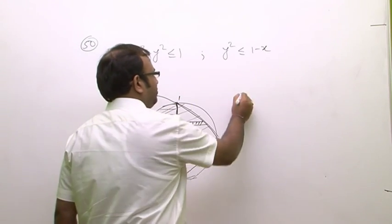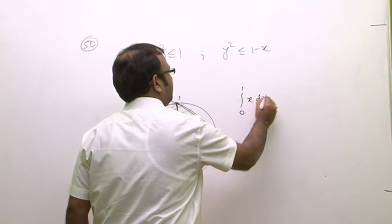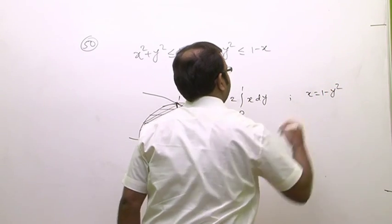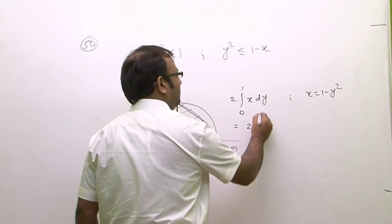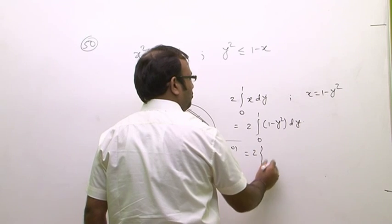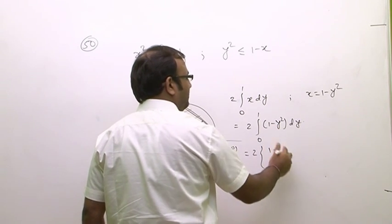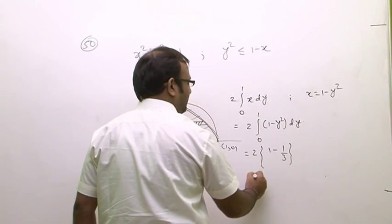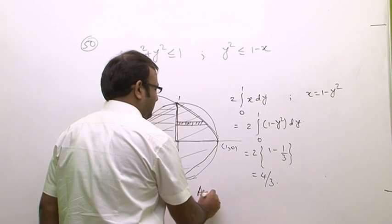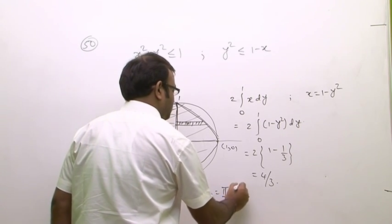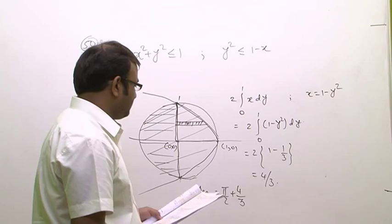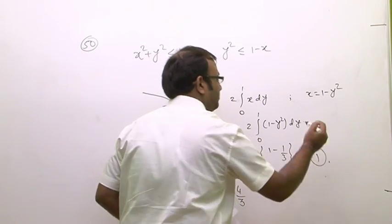For the parabolic region, we integrate horizontal strips from 0 to 1: 2∫₀¹ x dy where x = 1 - y². This gives 2∫₀¹ (1 - y²) dy = 2[y - y³/3]₀¹ = 2(1 - 1/3) = 4/3. Adding the half-circle area, the total required area is π/2 + 4/3, which is option 1.